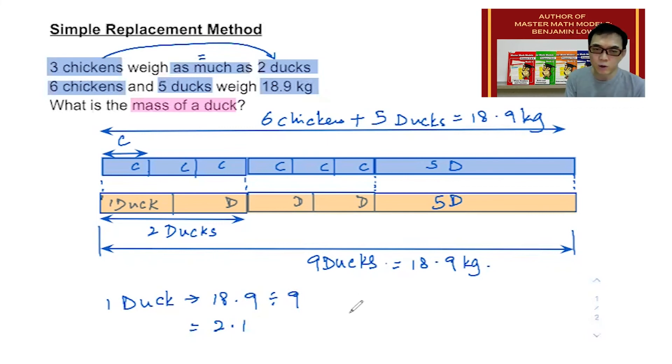So if one duck is 2.1 kilograms, and the question is what is the mass of a duck, I have already answered the question. The answer for this question is: each duck weighs 2.1 kilograms.